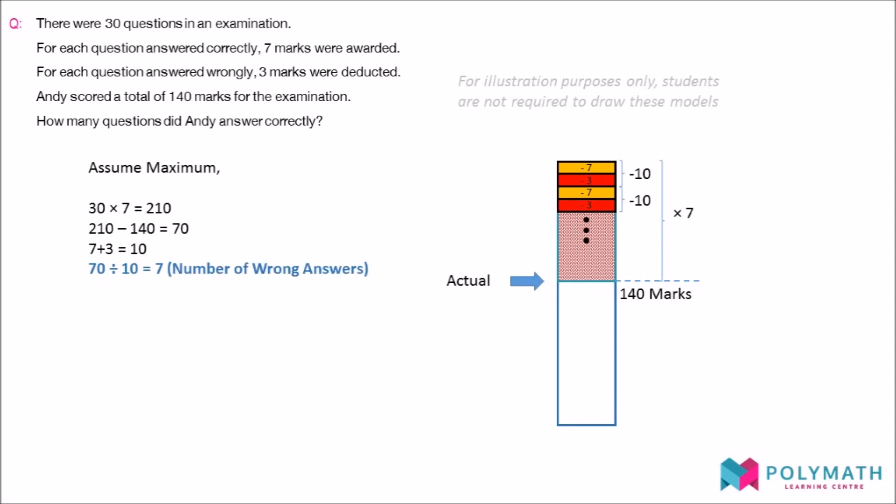Therefore, the number of wrong questions that Andy obtained is seven. As there are 30 questions in total and seven of them are wrong, 23 of the questions are answered correctly, and thus we have obtained the answer.